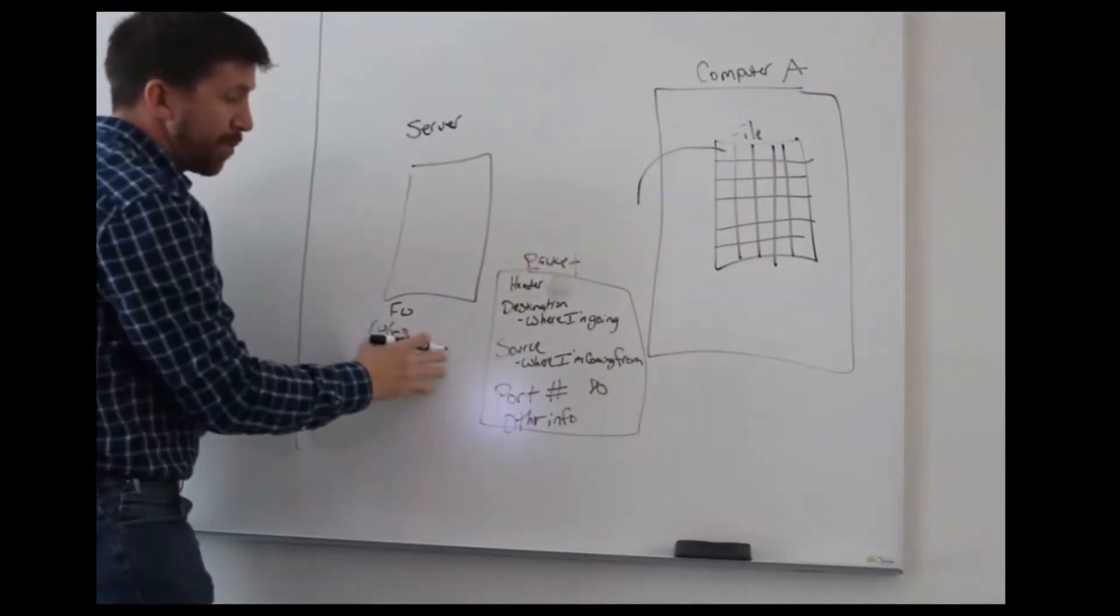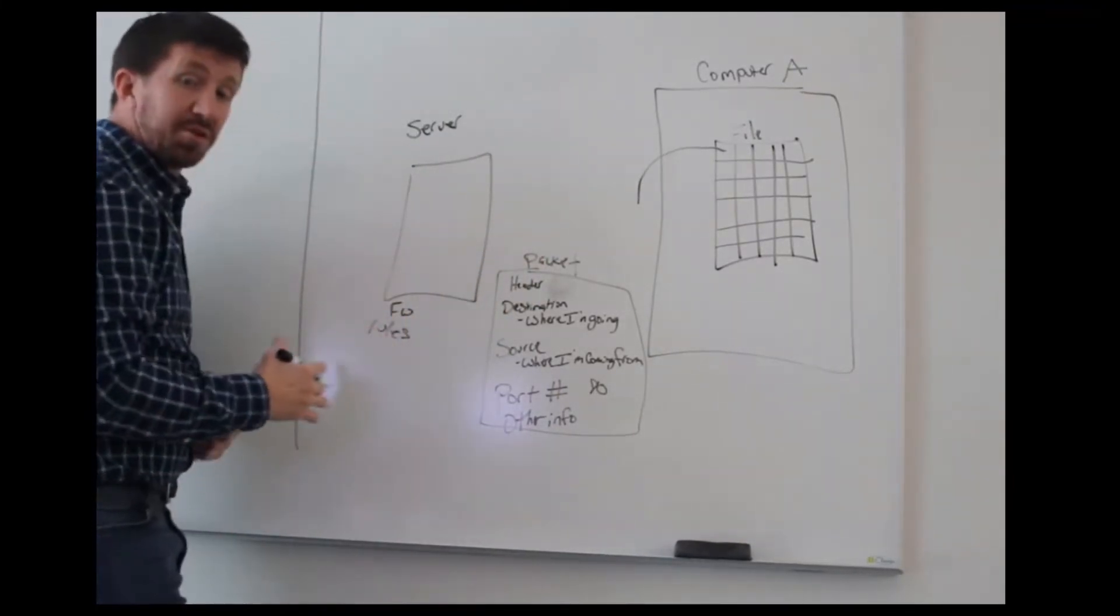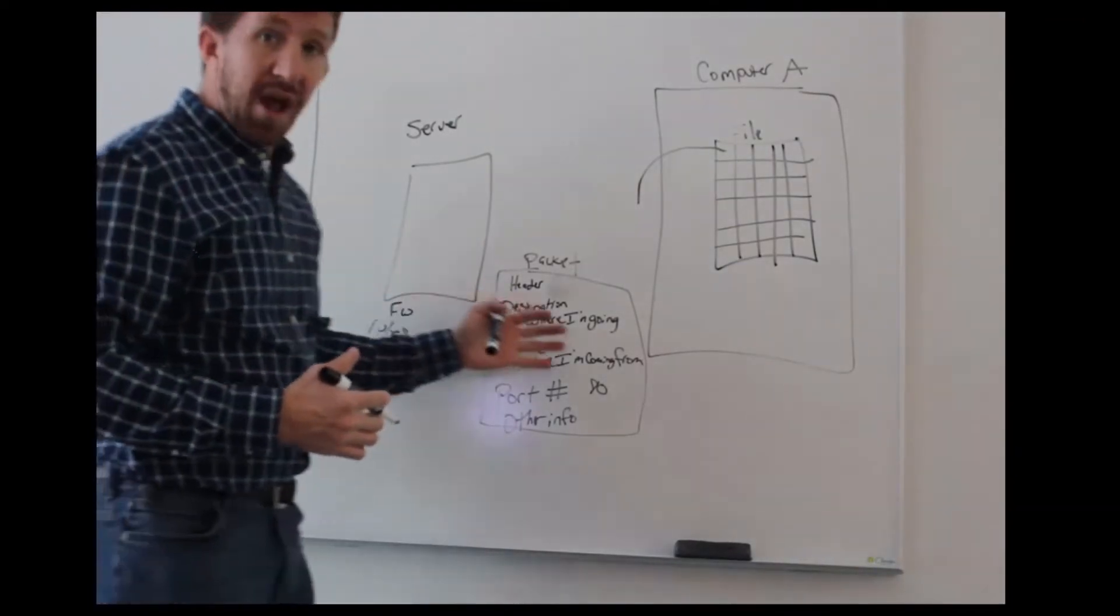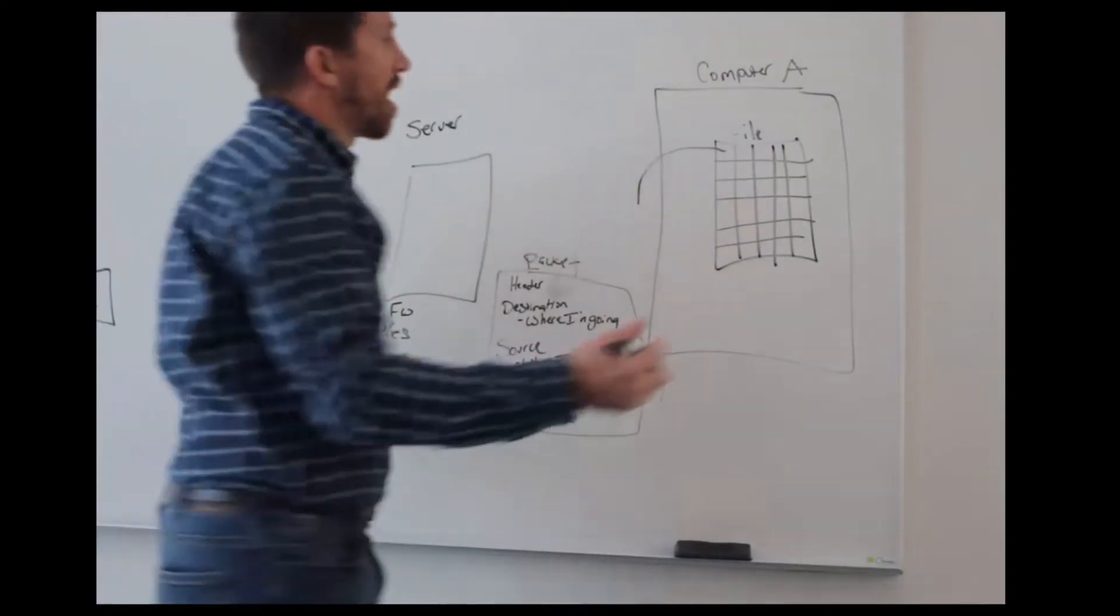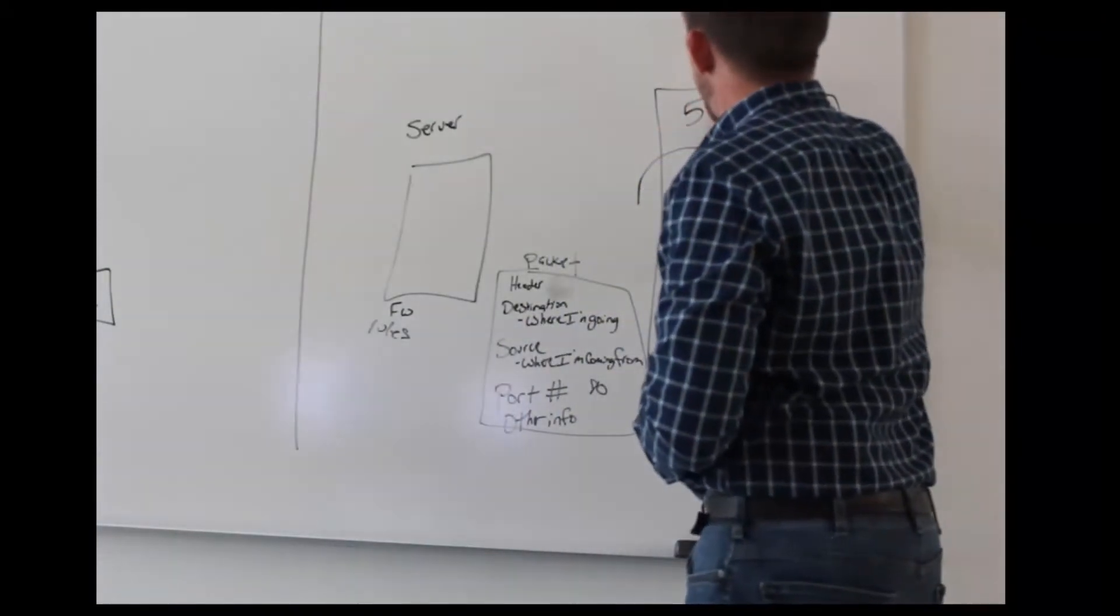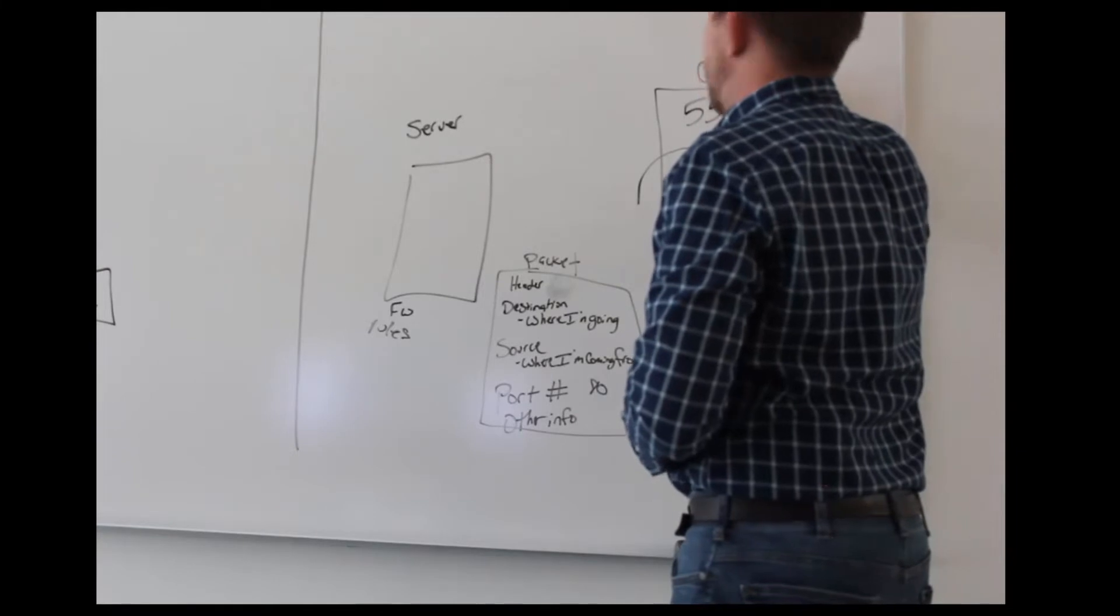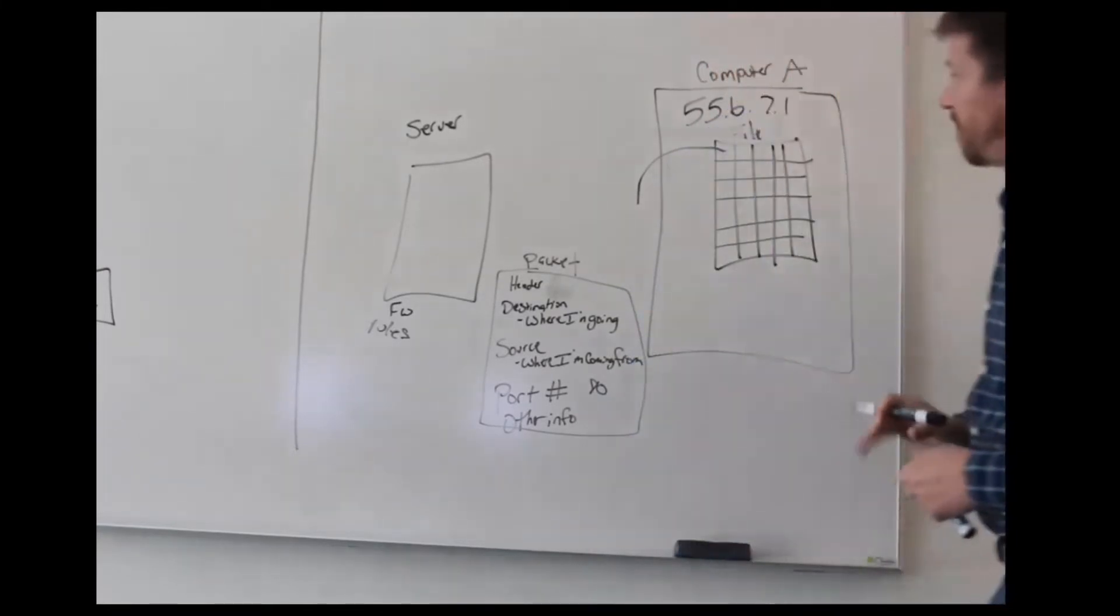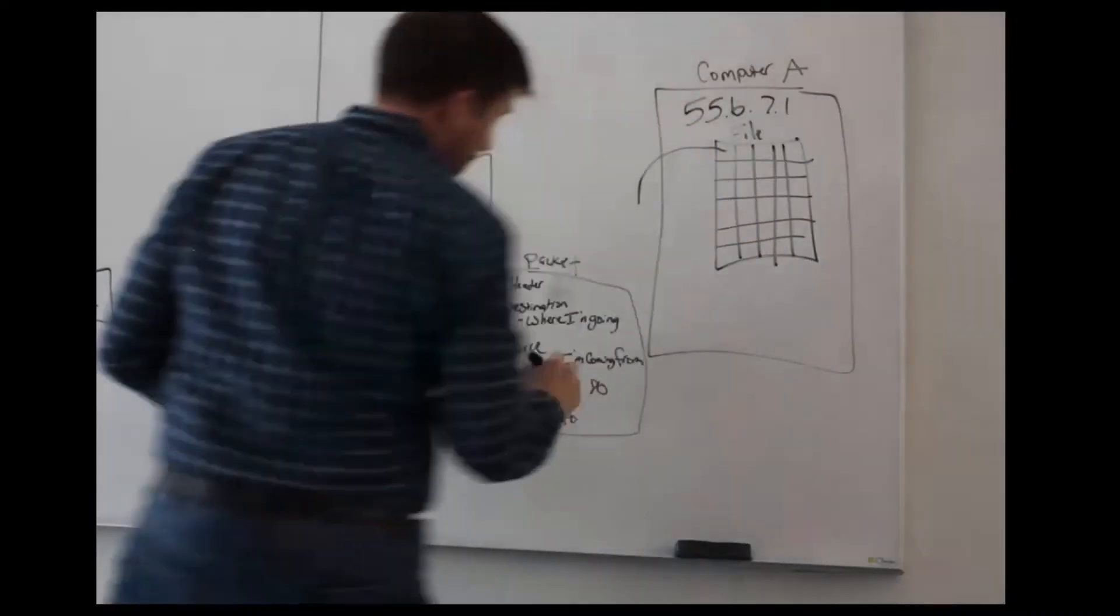on port 80. So I'm coming from computer A on port 80. The firewall looks at the rules and says, am I allowed to have incoming traffic on port 80 from computer A? And computer A, it really would have its IP address. We'll say its IP address is 55.6.7.1. So it's 55.6.7.1 sending that over here.